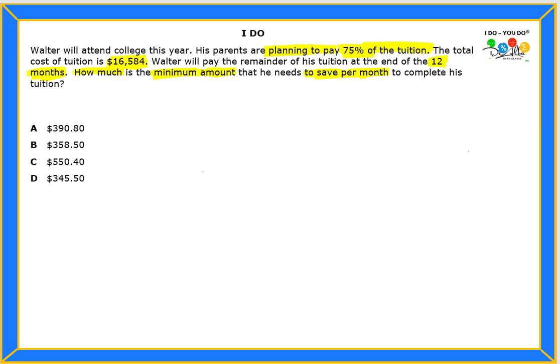So, think about it from this perspective. If the parents are willing to pay 75% of the tuition, then Walter needs to pay what percent of the tuition? 25%, right? Because together, it makes what? It makes the total tuition, very good.